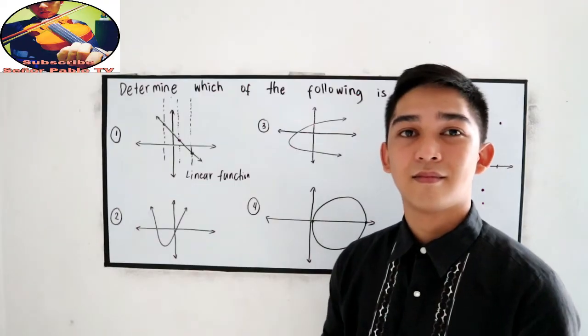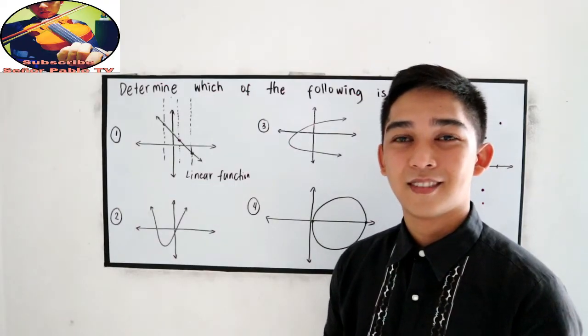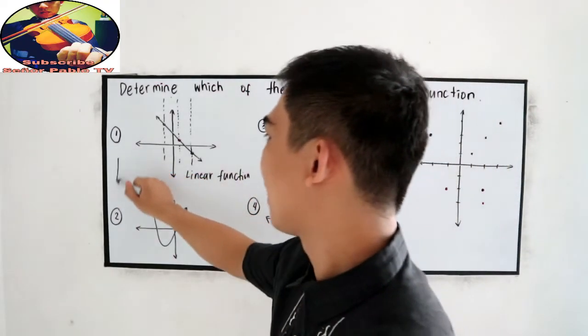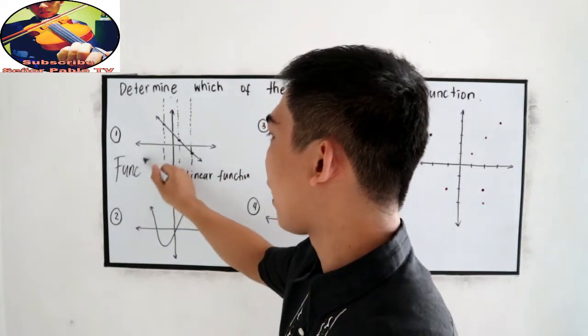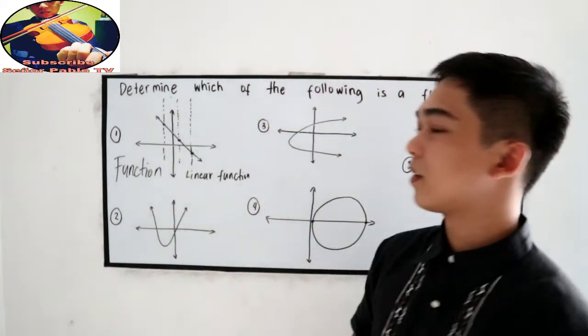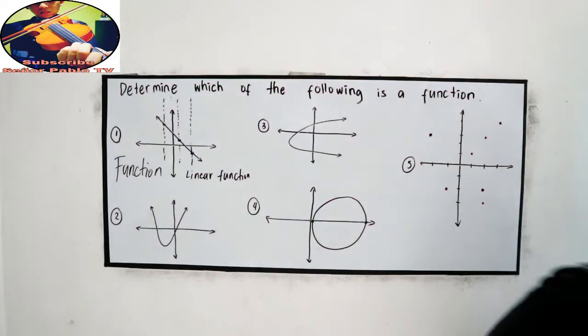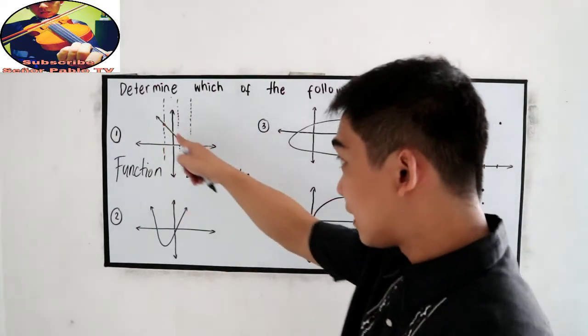This is an example of a linear function. Function or not? It is a function. Number one is a function. Why? Because it only touches one point in our graph.